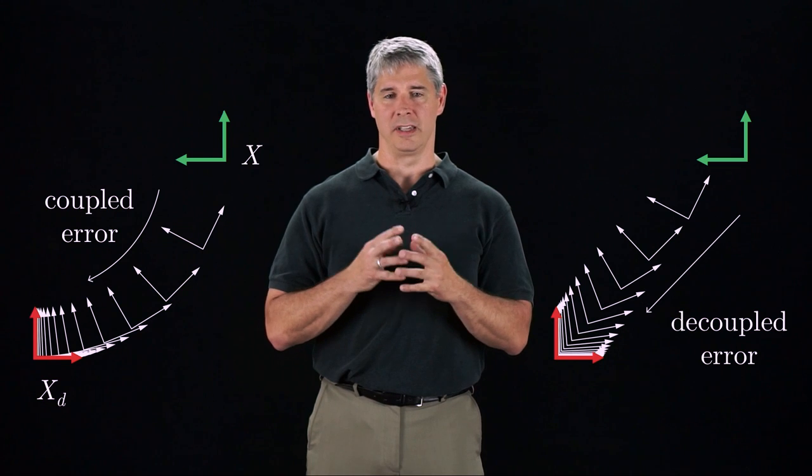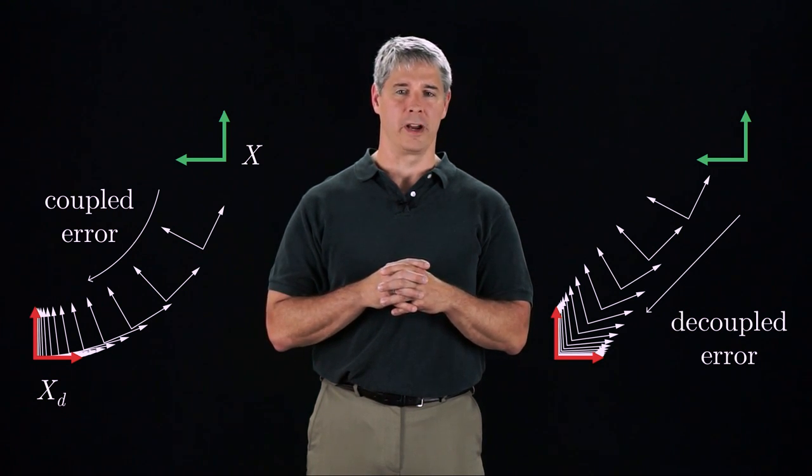the task space controller that couples angular and linear errors produces a motion about a constant screw axis. The decoupled task space controller, on the other hand, carries the origin of the frame along a straight-line path.